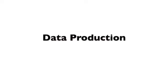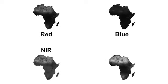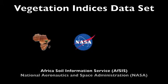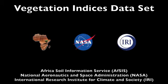The full-time and monthly averages for the red, blue, near-infrared, and mid-infrared were constructed and processed at 250-meter resolution by the Africa Soil Information Service. The original MODIS imagery was provided by the National Aeronautics and Space Administration, hosted by the International Research Institute for Climate and Society. The grids have been made publicly available for download on the AFSIS website at AfricaSoils.net.